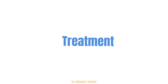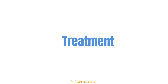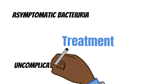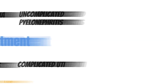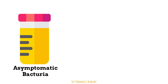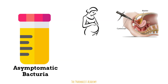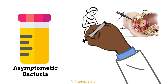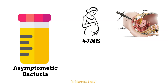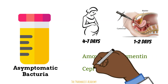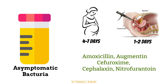Treatment is based on the final diagnosis, which can be asymptomatic bacteriuria, uncomplicated cystitis, uncomplicated pyelonephritis, or complicated UTI. Asymptomatic bacteriuria is the presence of bacteria in the urine with no signs or symptoms of a UTI. We mainly screen pregnant women and patients undergoing urologic procedures, as a serious infection could lead to severe complications. Pregnant women are screened after the first trimester; procedure patients are screened a couple days before. Treatment duration is four to seven days for pregnant women and one to two days for procedure patients. Medication options include amoxicillin, augmentin, cefuroxime, cephalexin, and nitrofurantoin — all oral medications taken at home.